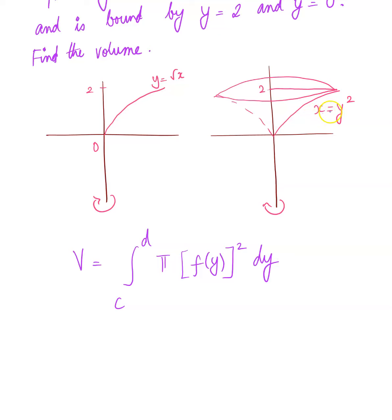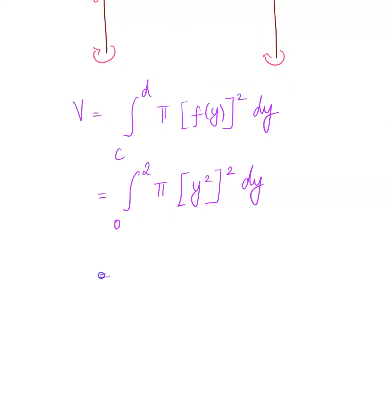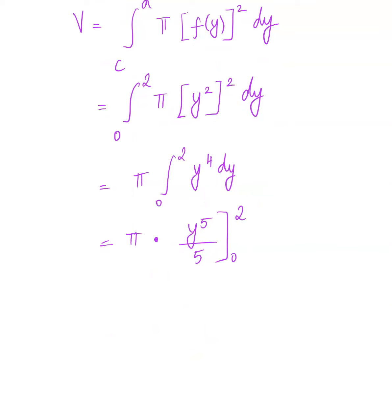The key information: when revolving about the y-axis, rewrite everything in terms of y. Our volume formula becomes V = π ∫ from c to d of [f(y)]² dy. The function is x = y² and the bounds are y = 0 to y = 2. So V = π ∫₀² (y²)² dy = π ∫₀² y⁴ dy = π[y⁵/5] from 0 to 2 = π(32/5) = 32π/5.